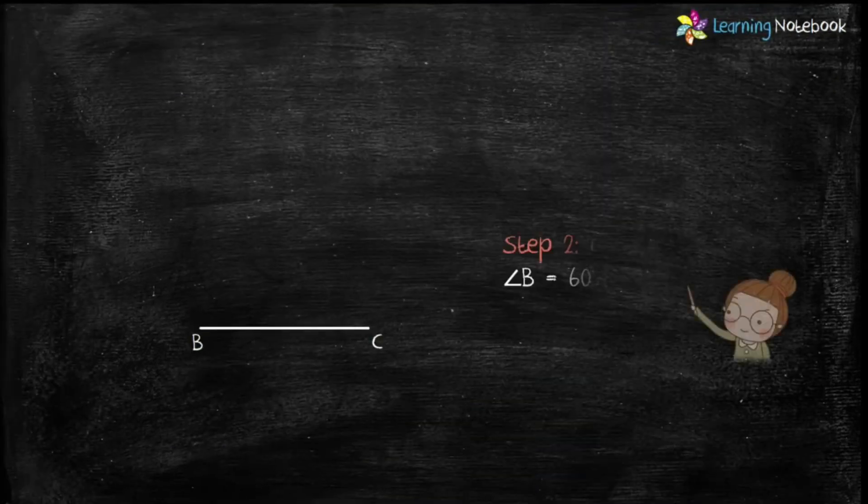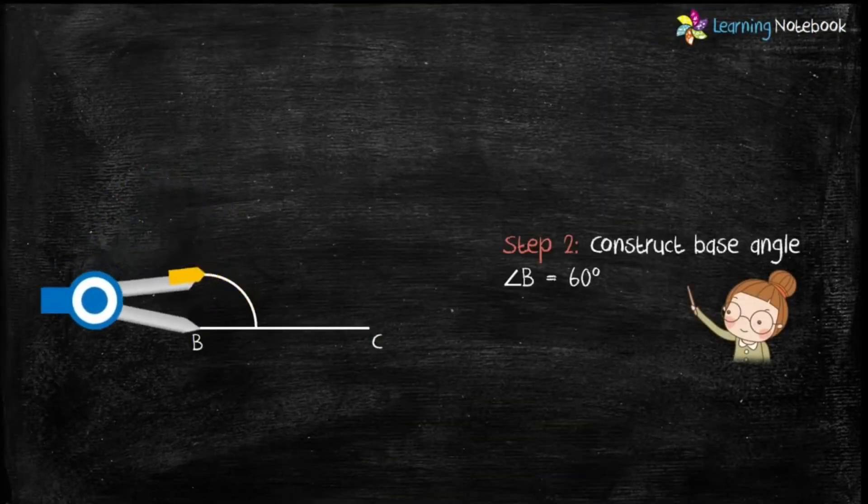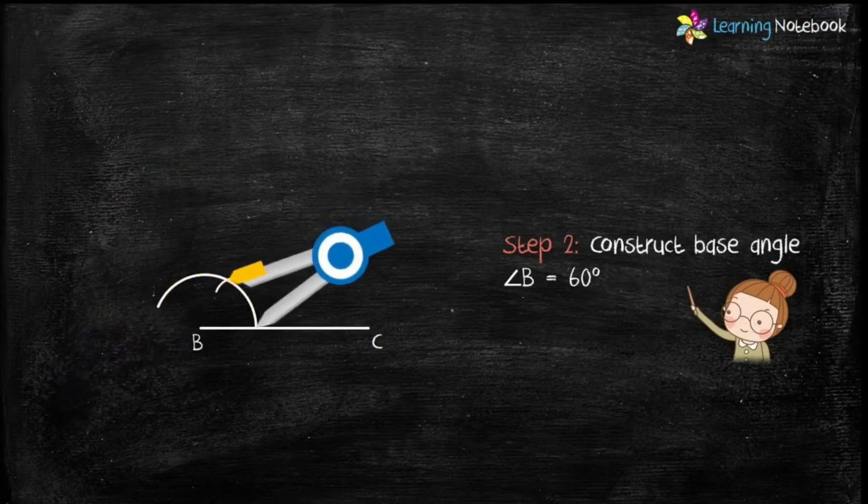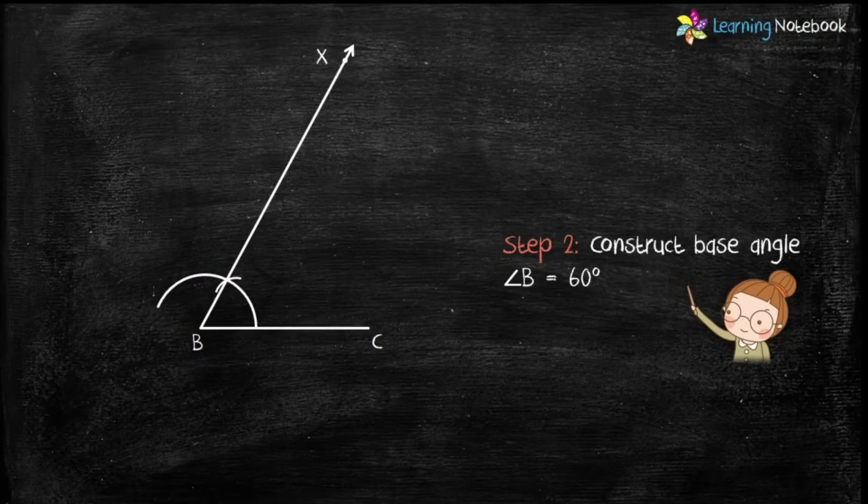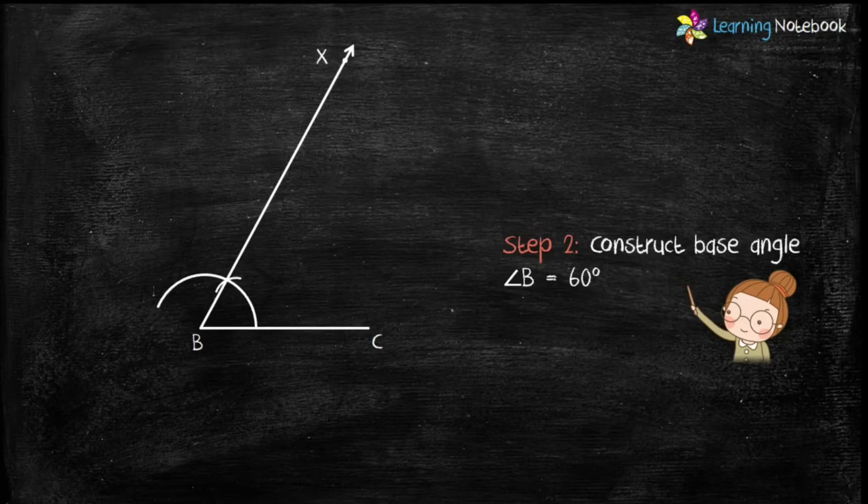Step 2 is, construct base angle B equals to 60 degree. You may refer to part 3 of this chapter to learn step by step how to construct an angle of 60 degree.